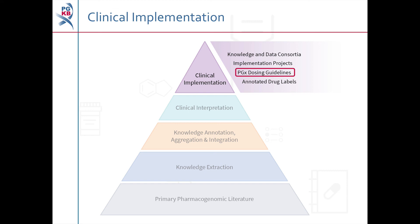These drug dosing guidelines are annotated in our knowledge base, along with those published by other groups. We also annotate drug labels which contain pharmacogenetic information, and integrate these labels into our knowledge base. Drug label annotations provide a brief summary of the pharmacogenetic information in each label and an interpretation of the level of action implied in each label.